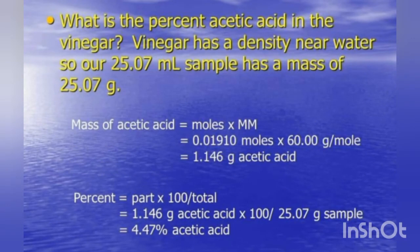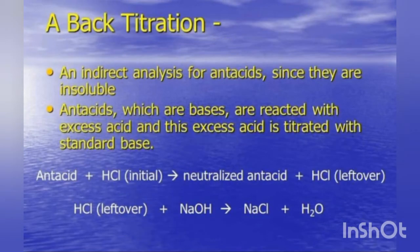In this way we can find the molarity of acetic acid. Looking at another example where we have to find the percentage of acetic acid: first we find the mass of acetic acid, then percent = (mass of acetic acid / total mass) × 100, and in this way we get the percent of acetic acid.